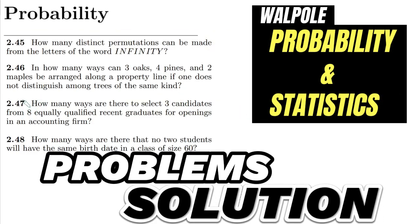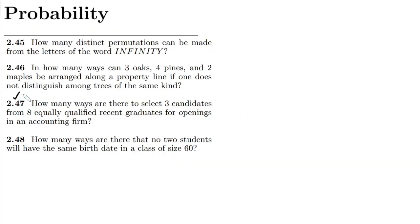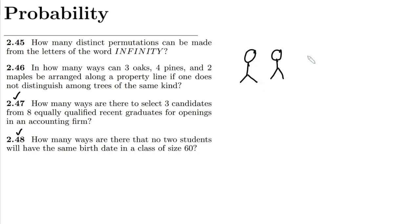Hi guys, so today we are going to solve questions 2.47 and 2.48. In question 2.47, the statement is: how many ways are there to select three candidates from eight equally qualified recent graduates for openings in an accounting firm? So here we have the total number of options which are eight.